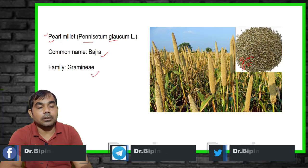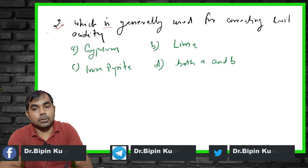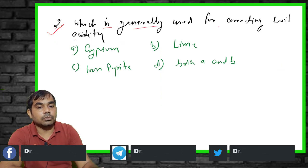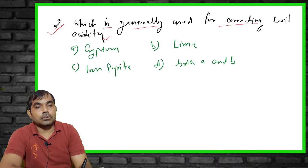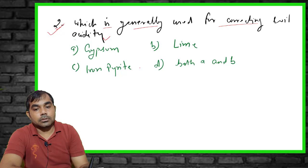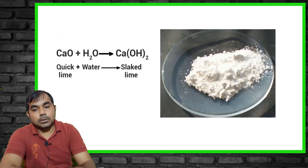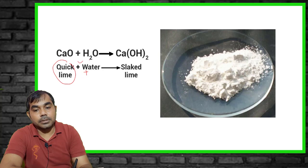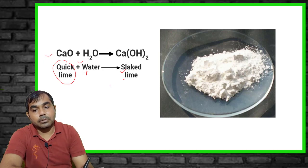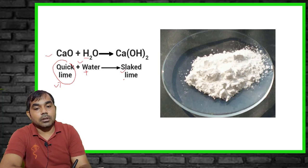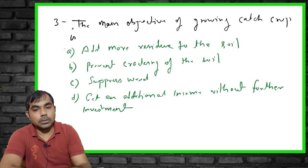The second question asks: which is generally used to correct the soil acidity? Options include gypsum, lime, iron pyrites, and both A and B. The right answer is lime. Lime exists in two forms: quick lime and slaked lime. When water is added to quick lime it becomes slaked lime. Calcium in lime neutralizes the pH of the soil, correcting its acidity.